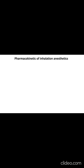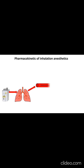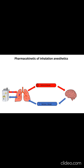The goal of delivering inhaled anesthetics is to produce the anesthetic state by establishing a specific concentration of anesthetic molecules in the central nervous system. This is done by establishing the specific partial pressure of the agent in the lungs, which ultimately equilibrates with the brain and spinal cord.